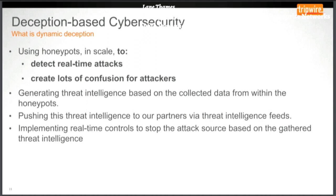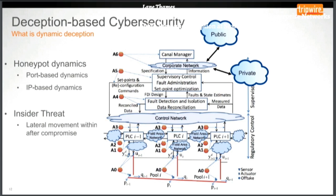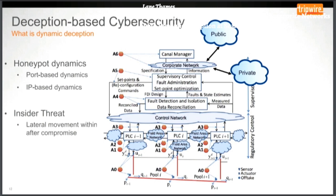We also want to implement real-time controls when we detect attackers using honeypot traps. Going back to this image, one key point is insider threat. When we talk about honeypots, you don't really care about putting one on internet-facing networks — you won't gain much information. What we're interested in is when the inevitable happens and an attacker gains a foothold on the inside of your network, what we'd call an insider threat. That's where this technology can really make a big difference.